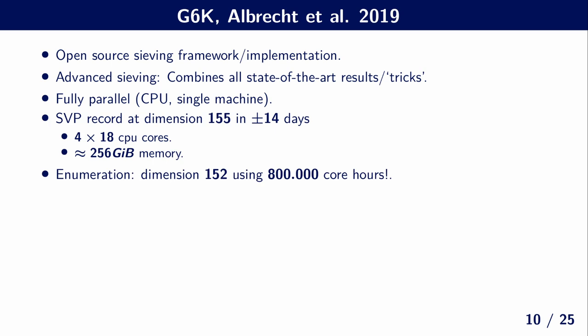So if we compare this to the old way of solving the shortest vector problem with enumeration, which is asymptotically inferior methods, but does only use polynomial memory, hence it's trivial to parallelize. So for this method, the old records were at dimension 152, however, using more than 800,000 core hours. So it's clear that these sieving methods, both asymptotically but also in practice, usually improve on the enumeration.